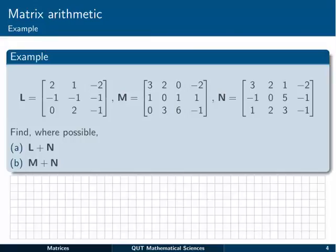Let's have a look at it in an example. Here we've got three matrices, L, M and N. We need to find, where possible, L plus N and M plus N. Maybe pause the video for a moment and have a go at this one yourself, and see what you come up with before coming back and seeing how I go through it.